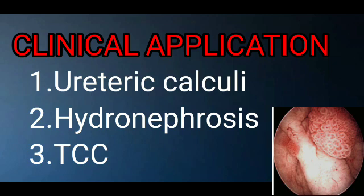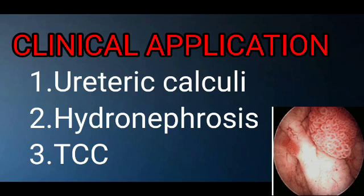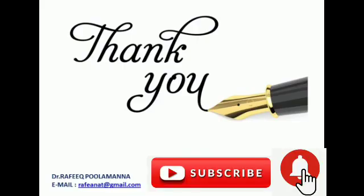The next condition is transitional cell carcinoma, or urothelial cancer. This is a malignant transformation of the urothelium or transitional epithelium, and it can occur in the urinary bladder as well. Thank you for watching this short video explaining the histological features of the ureter.